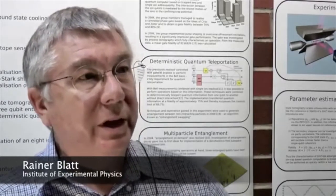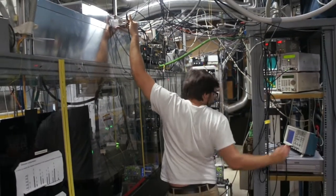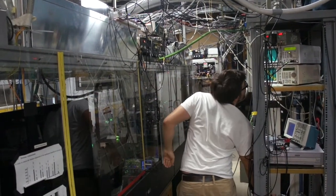Error correction is a technique that is ubiquitous in everyday information processing. In our experimental ion trap group at the University of Innsbruck, we are developing and testing the technology that is required to actually build such a quantum computer.